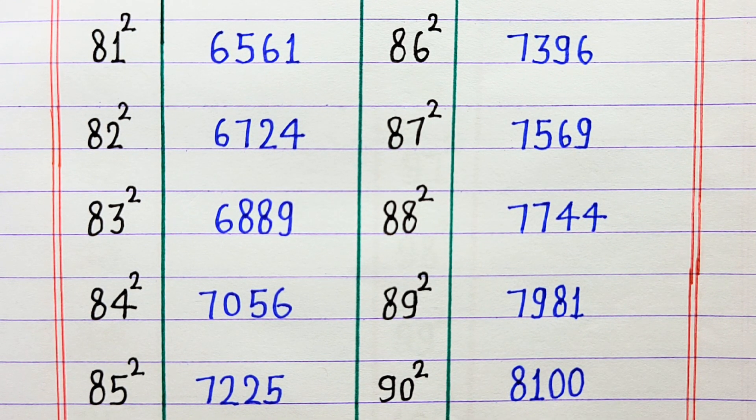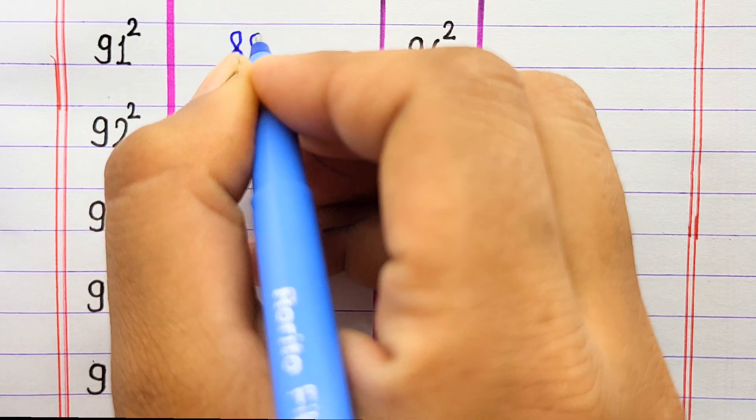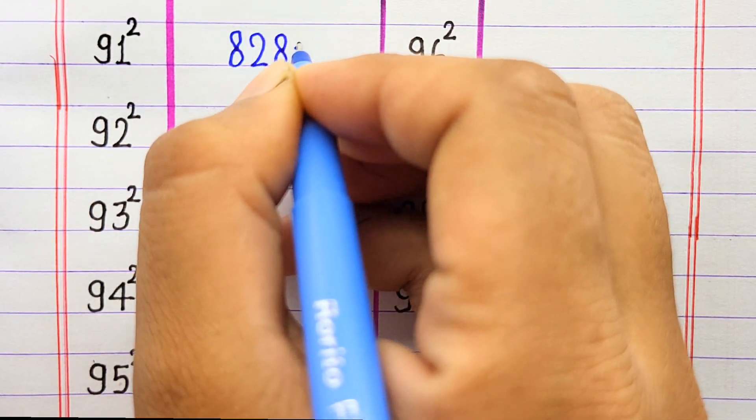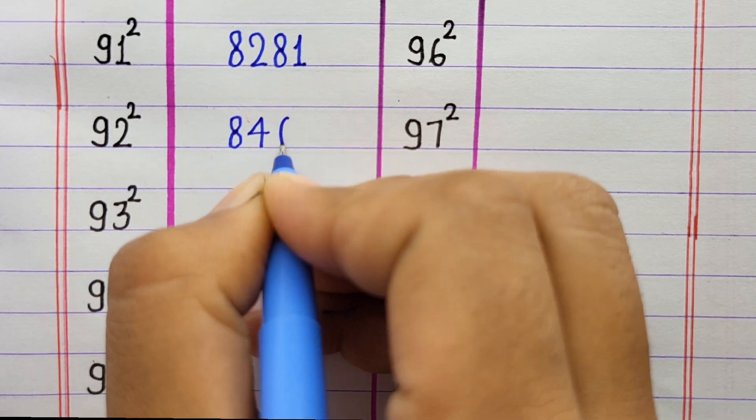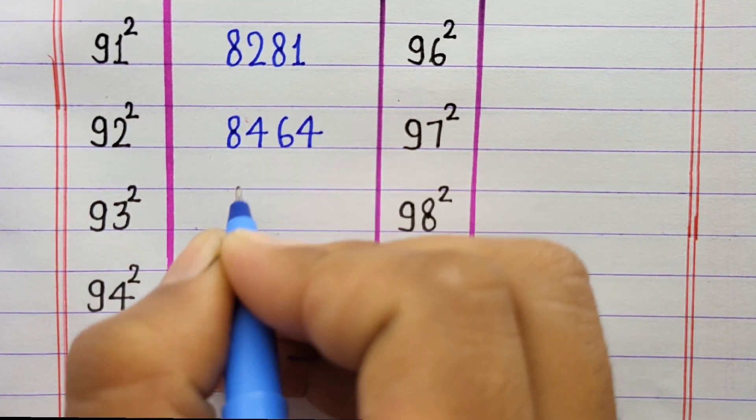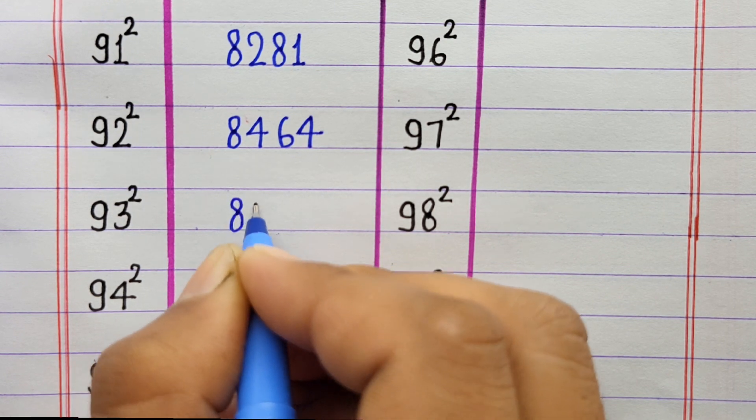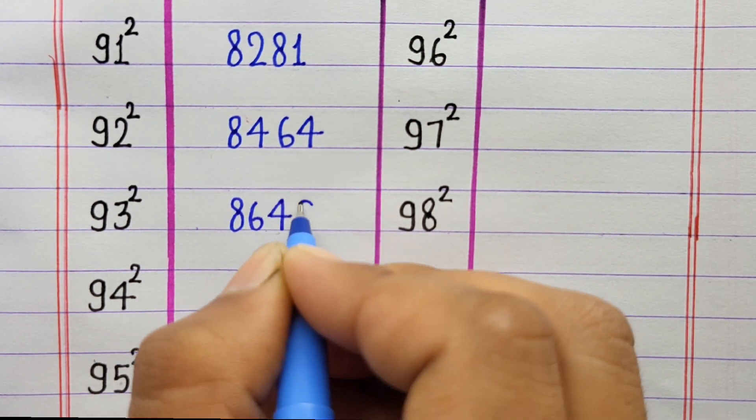91 ka square 8281, 92 ka square 8464, 93 ka square 8649.